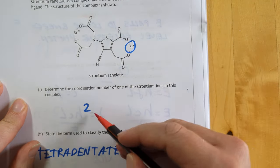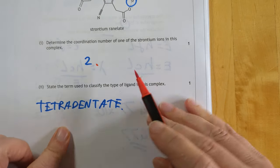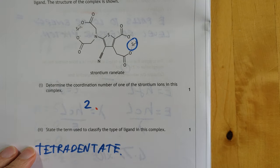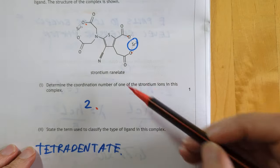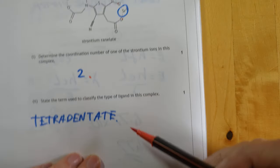Coordination number, I draw a circle around it, cuts two bonds. That's why I get a 2. The ligand itself has got four attachment points. So this is just one ligand, so it's a tetradentate ligand.